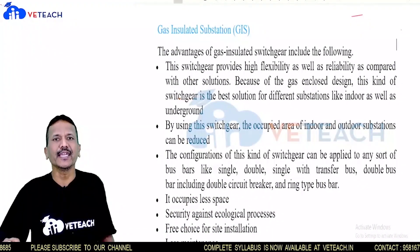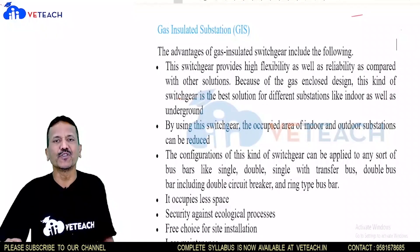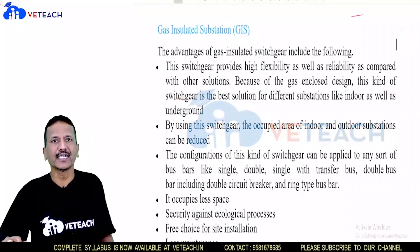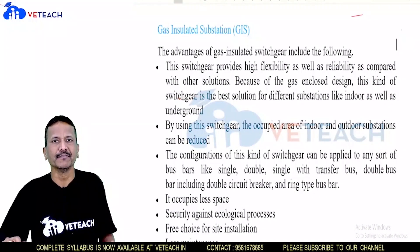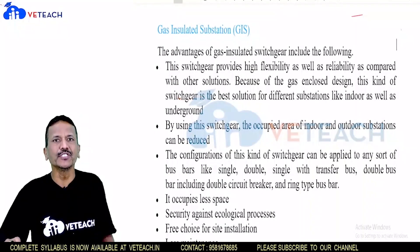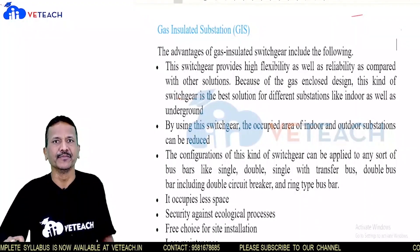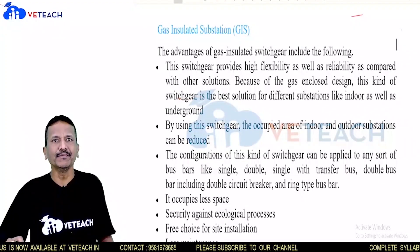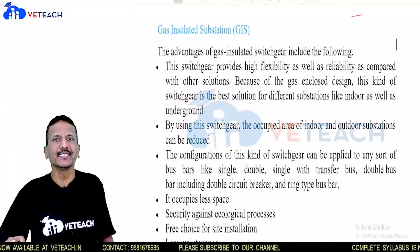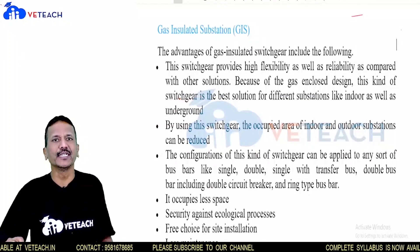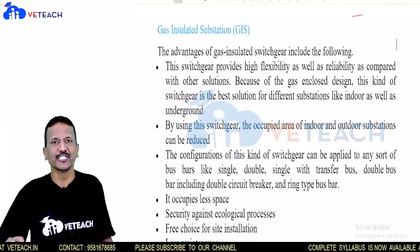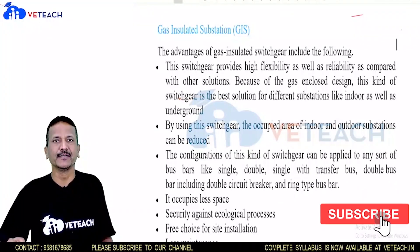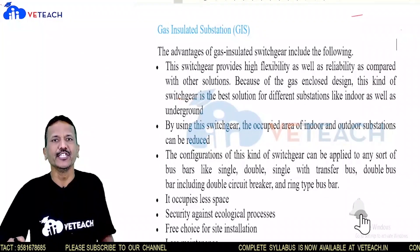Before GIS, we used AIS — air insulated substation. Whenever a fault occurs in a breaker, in a substation we use air as the insulation to control the total system. But to overcome the limitations of AIS, nowadays in the latest technology we are using a gas insulated substation.